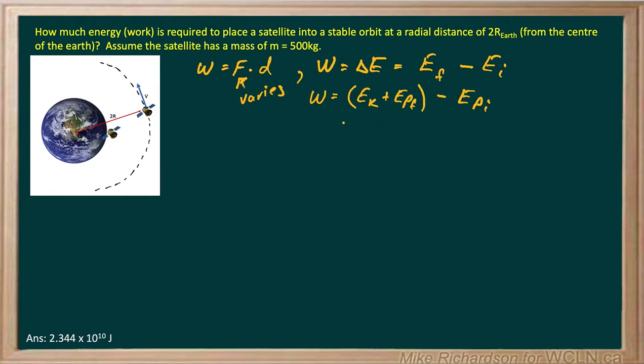So when we write this equation, what does it look like? Work equals one half. Now, m is the mass that's in motion. So I'm going to call the mass of the satellite little m. And I'm going to call the mass of the Earth big M. So it's going to be one half little m v squared plus.